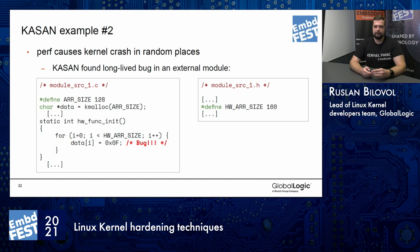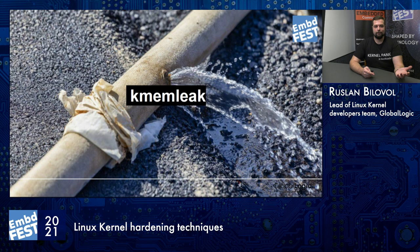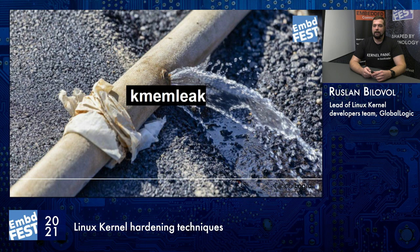Let's move to the next topic: memory leaks. It's another kind of issue we have with the kernel. With kernel memory leaks, it's also difficult to find what is leaking, because you can have small memory leaks and there was no instrumentation to find what is leaking. Previously you had to disable some features and check if memory is still leaking. Luckily we have KMemLeak. KMemLeak has been with us for more than 10 years, so it's an already proven and tested feature. It's a runtime memory leak detector using a tracing garbage collector approach. For people who work with user space, they know MemCheck or Valgrind — similar to that. Since it was merged a long time ago, it currently supports most kernel architectures.